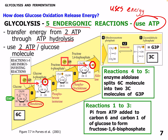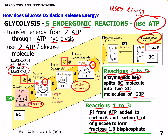We use 2 ATP per glucose molecule. Reactions 1 to 5 are energy-investing reactions. In the preparatory phase, reactions 4 to 5 are the cleavage phase, where the enzyme aldolase splits the 6-carbon molecule into 2 three-carbon molecules of G3P — glyceraldehyde-3-phosphate. In reactions 1 to 3, phosphate from ATP is added to carbon 6 and carbon 1 of the glucose to form fructose 1,6-bisphosphate. Those 1 and 6 indicate the carbon location and where the phosphates are added, as you can see here.